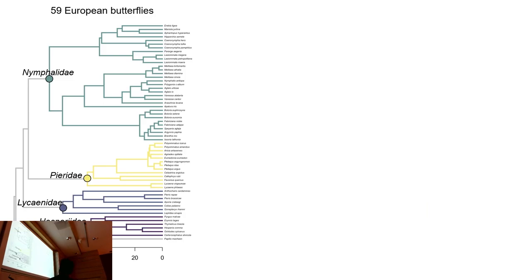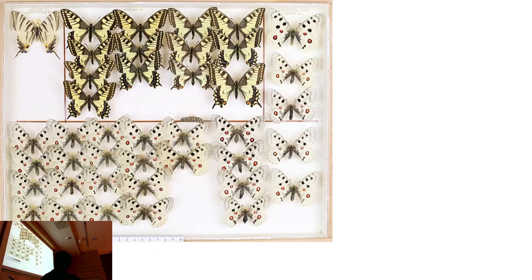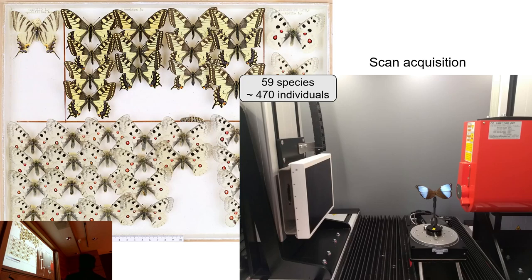We're focusing on European butterflies because it's much easier to get data on, and there's a lot of ecology we know, which we can use to see if it predicts eye size. We have a good representation across five different families, and also good depth in terms of evolutionary history. We use all museum specimens to do this, and I use micro-CT scanning to actually capture the data.